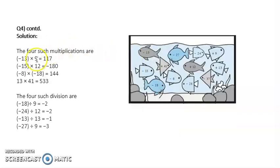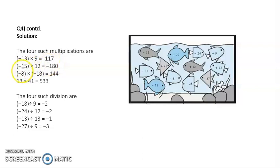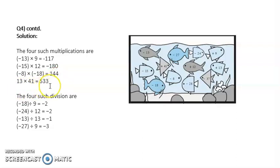I have done some for you. The 4 multiplications are: minus 13 into 9 — the answer would be minus 117. Minus 15 into 12 — the answer is minus 180. Minus 8 into minus 18 — I get 144. And 13 into 41 is 533.